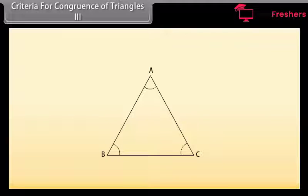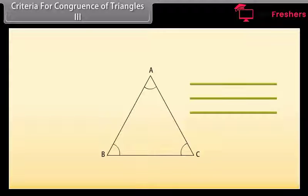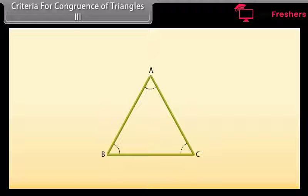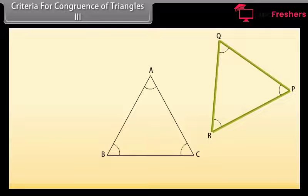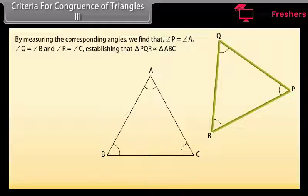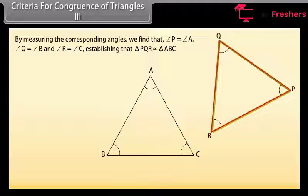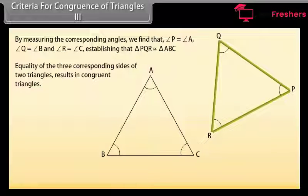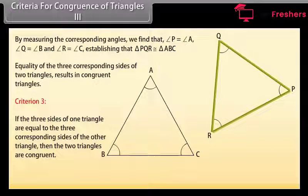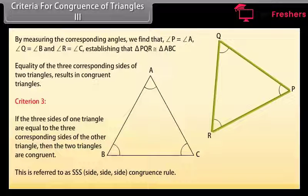Criteria for Congruence 3: Take three sticks equal in length to sides AB, BC, and CA of triangle ABC. Place them in any order to form triangle PQR. By measuring the corresponding angles, we find that angle P equals angle A, angle Q equals angle B, and angle R equals angle C, establishing that triangle PQR is congruent to triangle ABC. Thus, Criterion 3 — SSS (Side Side Side): if the three sides of one triangle are equal to the three corresponding sides of the other triangle, then the two triangles are congruent.